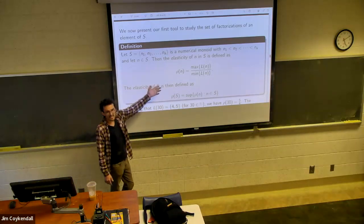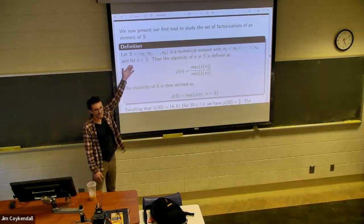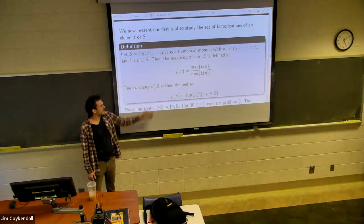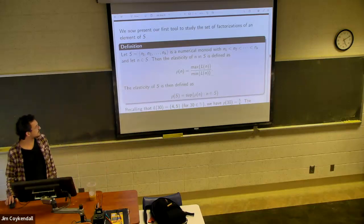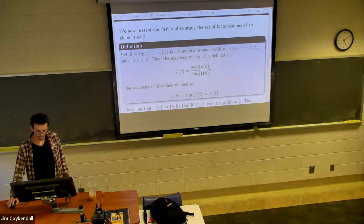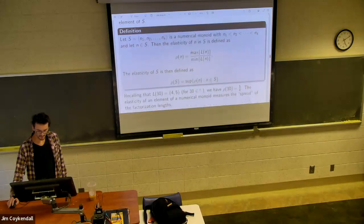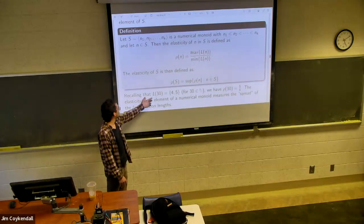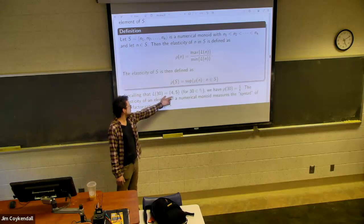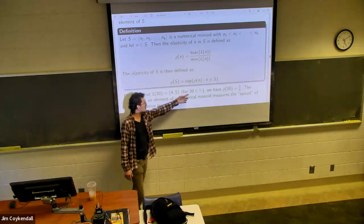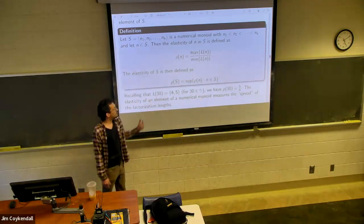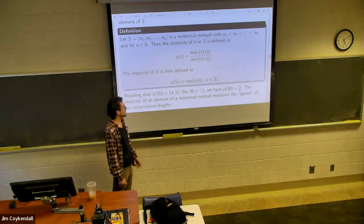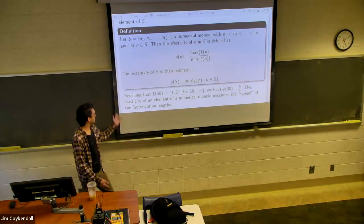And then, as is tradition in the field, if you define something for an element, you just kind of generalize it for the monoid. It seems to be a running theme. So we'll see that come up again and again. A quick example. Okay, so we have four and five in our set, for 30 in our chicken. Then rho of 30 is five over four. So the elasticity of an element, a numerical monoid, that is the spread.